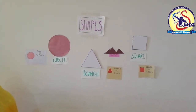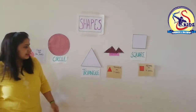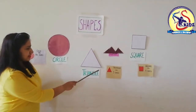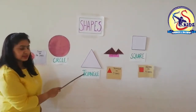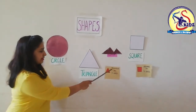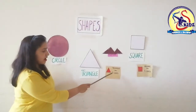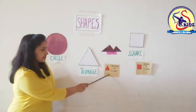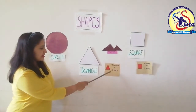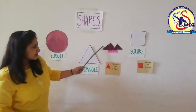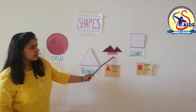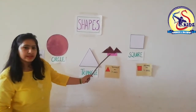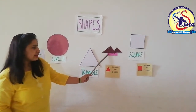We will move on to another shape — triangle. This is a triangle. Triangle has three sides. You all have seen mountains. This is a mountain. A mountain has three sides, so it is triangular in shape.